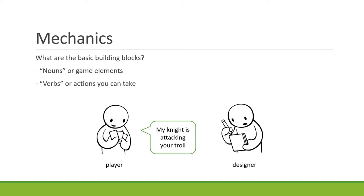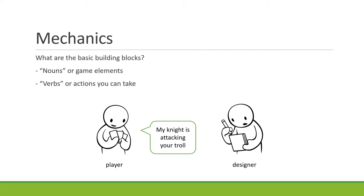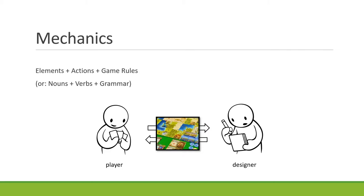Now that we have objects and actions that those objects can take, the other thing is the rules for how those things combine together — what kinds of things can do what kinds of actions with what kinds of other things. We can talk about this as grammar in language, but in games these are really the rules of the game: what kind of movement, what kind of actions, what kind of attacks. Altogether, the elements, the actions, and the game rules make up the mechanics of the game. Something like chips or money or movement is not a mechanic per se — what really binds them together is the rules, and this idiomatic combination gives rise to a mechanic.